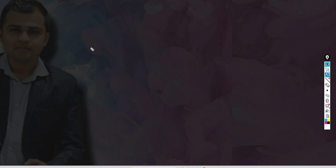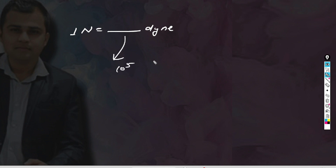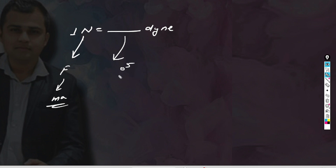A very common fill-in-the-blank question: 1 Newton is equal to how many dynes? The answer is 10 to the power of 5 dynes. Newton means force, and force equals mass into acceleration. We can convert from SI to CGS units using units and measurements.